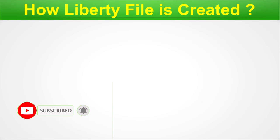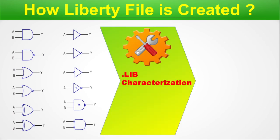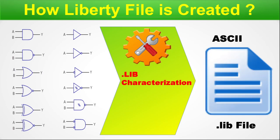How is the liberty file created? The liberty file is a very important file used in timing analysis, and the major part of characterization work is aimed at producing this liberty file. All our basic gates from the standard cell library are passed through the dot-lib characterization process, and the output is an ASCII file with extension .lib — also called the liberty format, timing library file, or timing .lib file. This is a simple overview; the next slide goes much more in depth.